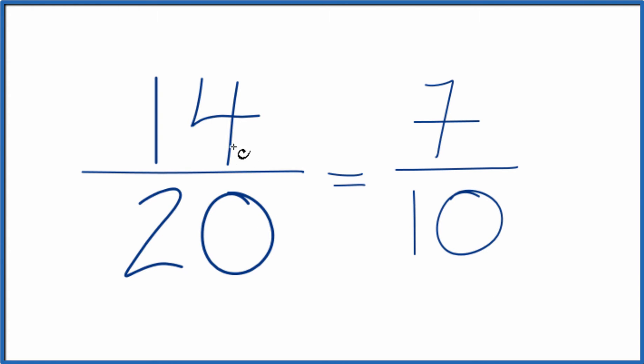That means when we reduce the fraction 14 over 20, we get 7 tenths. This is in lowest terms. We can't reduce it any further.